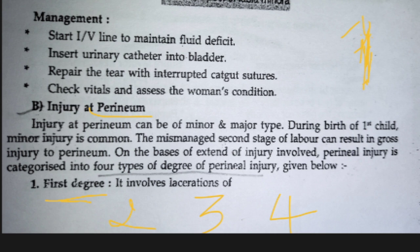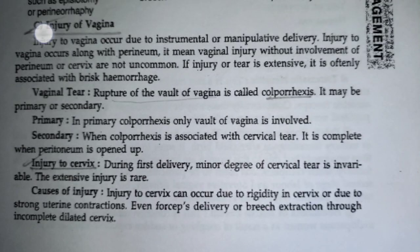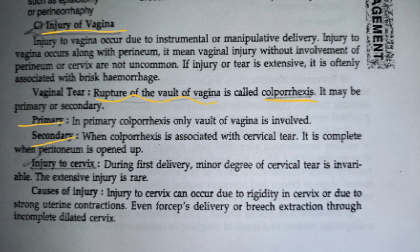Injury of the vagina and rupture of the vaginal membrane is known as colporexis. This is of two types — primary and secondary. If only the vaginal layer is injured, it is primary colporexis. If the injury extends from the vagina to the cervix, that is secondary colporexis.